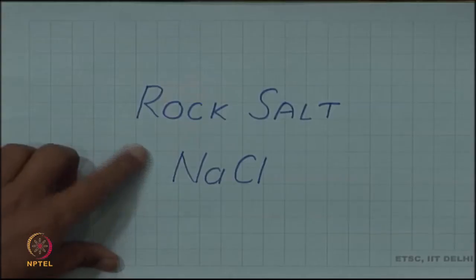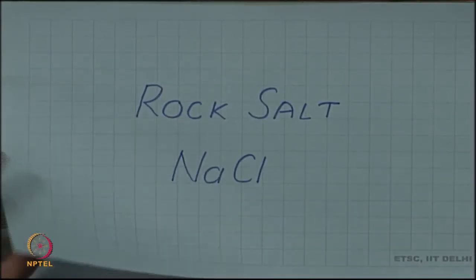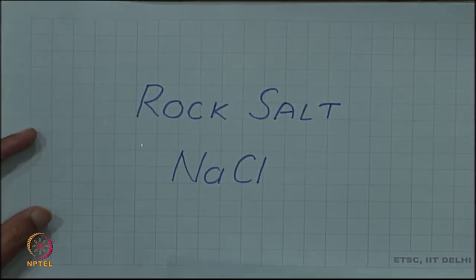Let us look at some examples of ionic solids which we have discussed. The radius ratio plays an important role in determining the structure of ionic solids. As a first example, we take rock salt or sodium chloride.